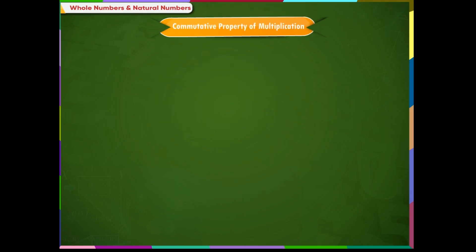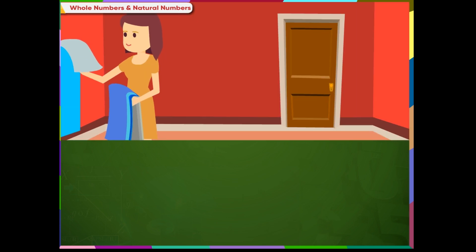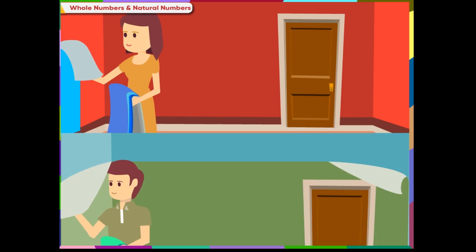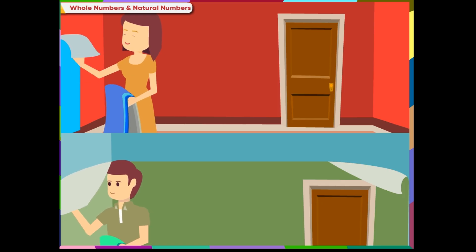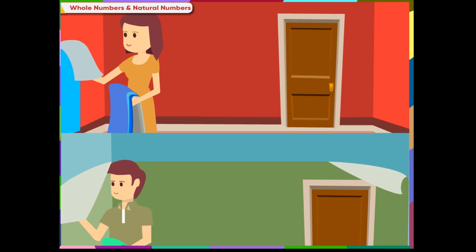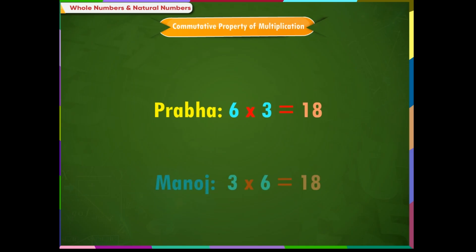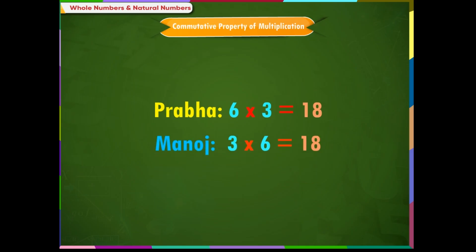Commutative property of multiplication: Prabha has six blue wallpaper pieces in each of the three walls and Manoj has put three wallpaper pieces in each of the six walls of the house. Observe that the product of two whole numbers is the same irrespective of the order of the factors. This property is called the commutative property of multiplication. Thus, Prabha and Manoj both have put the same number of wallpaper pieces.